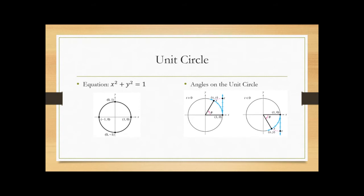When we refer to angles on the unit circle, we're always starting at the horizontal axis, usually the positive horizontal axis, and then your angle is either going up or down. If it's going up, we are moving counterclockwise, and that is the standard angle. Going counterclockwise is a positive angle; going clockwise is a negative angle.